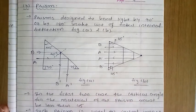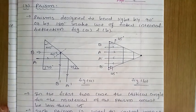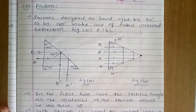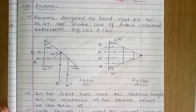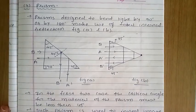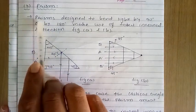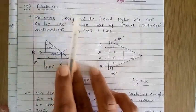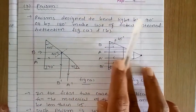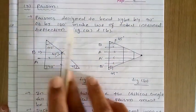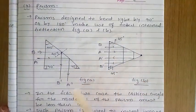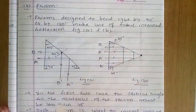First of all, we are starting with Prism. Prisms are designed to bend light by 90 degrees or 180 degrees to make use of total internal reflection, as shown in figure A and figure B.